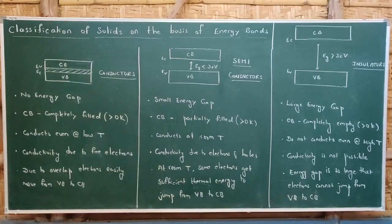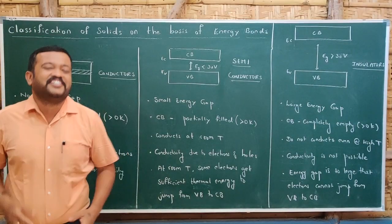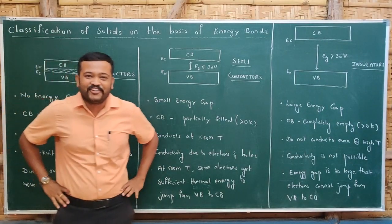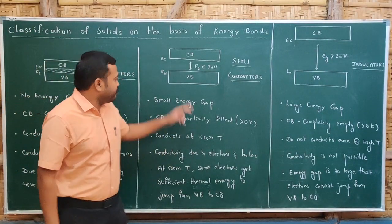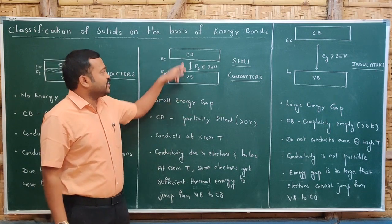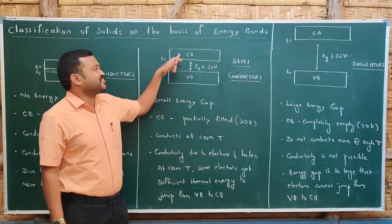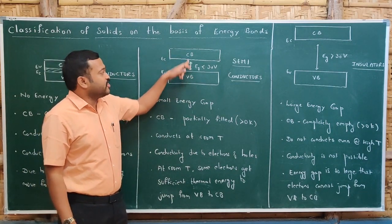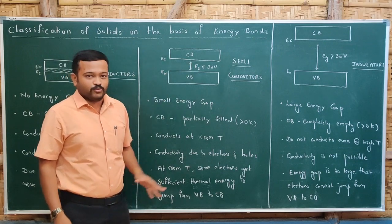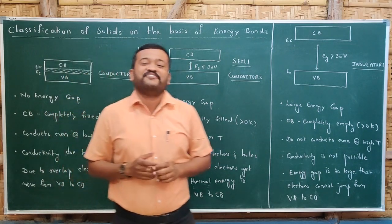The gap between the top of the valence band and the bottom of the conduction band is called the energy gap. Based upon the energy gap, we classify solids into conductors, insulators, and semiconductors — this is what we call band theory. Let us now classify based on band filling.